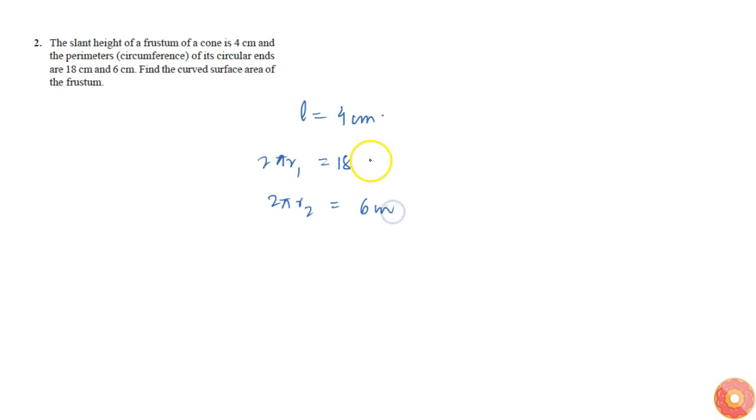We are asked to find the curved surface area. The curved surface area is π(r₁ + r₂)L, which can be written as (πr₁ + πr₂)L.